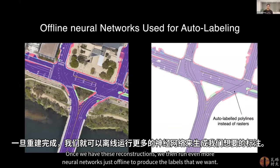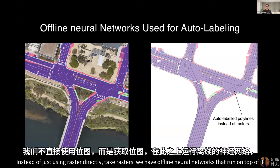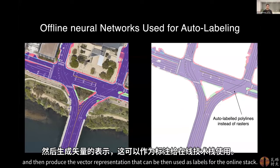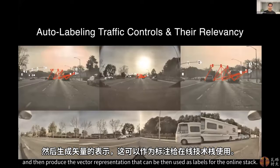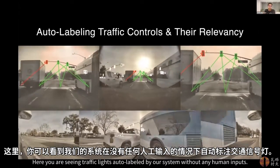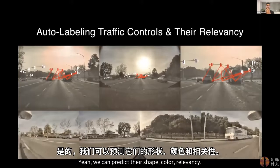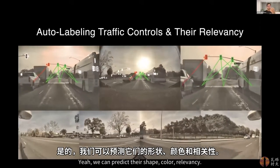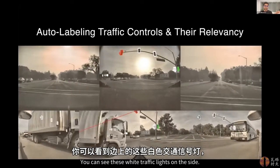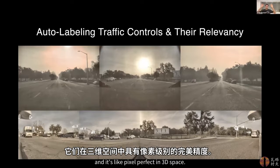Once we have these reconstructions, we run even more neural networks offline to produce the labels we want. For lanes, we need a vector representation to make it easy to use, so instead of using the raster directly, we have offline neural networks that run on top and produce the vector representation used as labels for the online stack. Similarly, once you have the lanes and roads reconstructed, you can auto-label traffic lights — here you're seeing traffic lights auto-labeled by our system without any human inputs. We can predict their shape, color, and relevancy. They also reproject correctly into all camera views because we have a really good auto-labeling system that calibrates everything jointly — it's pixel-perfect in 3D space.